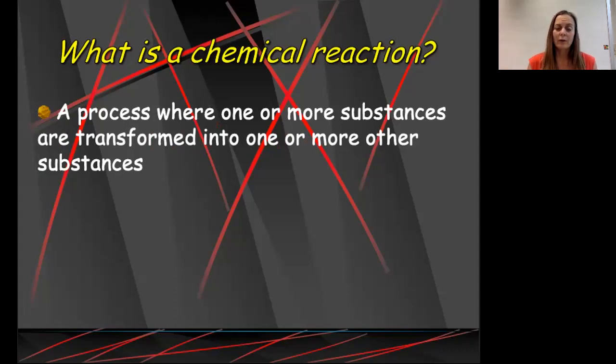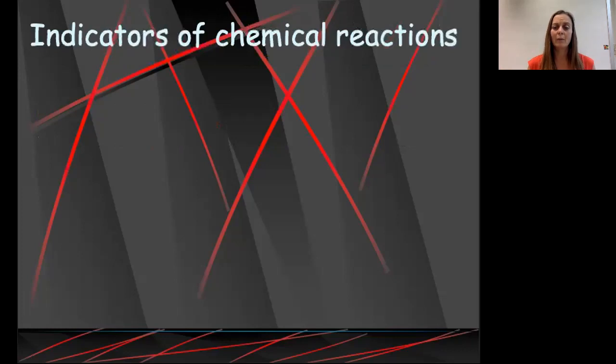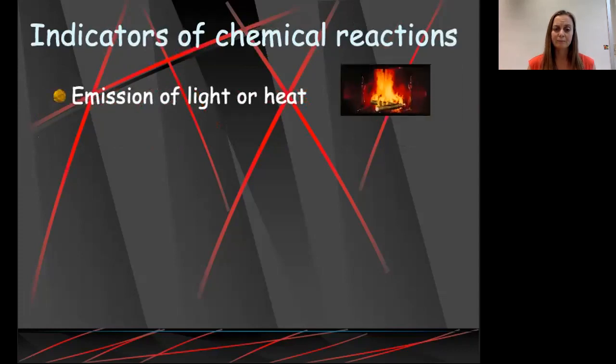We're just going to have a quick review of the indicators of a chemical reaction. We've talked about these before. One of our indicators of a chemical reaction is the emission of light or heat. For example, when we burn a log, we know that's a chemical reaction. It emits both light and heat.